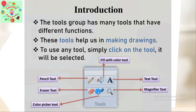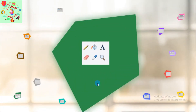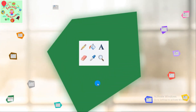So which are the tools in MS Paint? We have pencil tool, eraser tool, color picker tool, magnifier tool, text tool, and fill with color tool. Now let's study these tools in detail one by one.